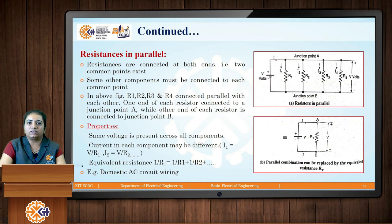Next we have resistances connected in parallel. Here R1, R2, R3 and R4 are all connected in parallel across a common voltage source V. The voltage across each element R1, R2, R3 and R4 is the same, but since there are junction points the total current I gets divided into branches, giving I1, I2, I3 and I4 — different currents flowing through each element.